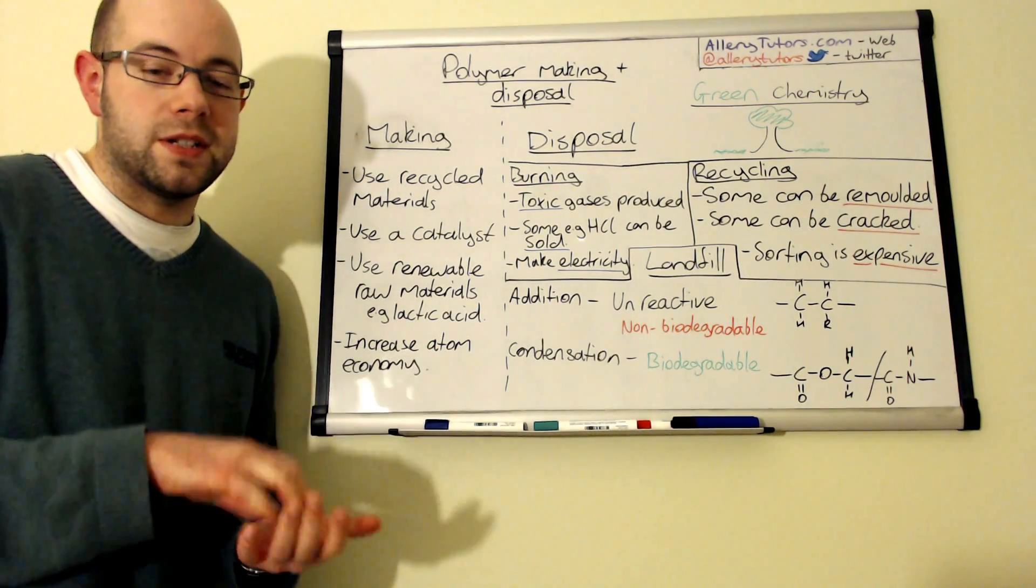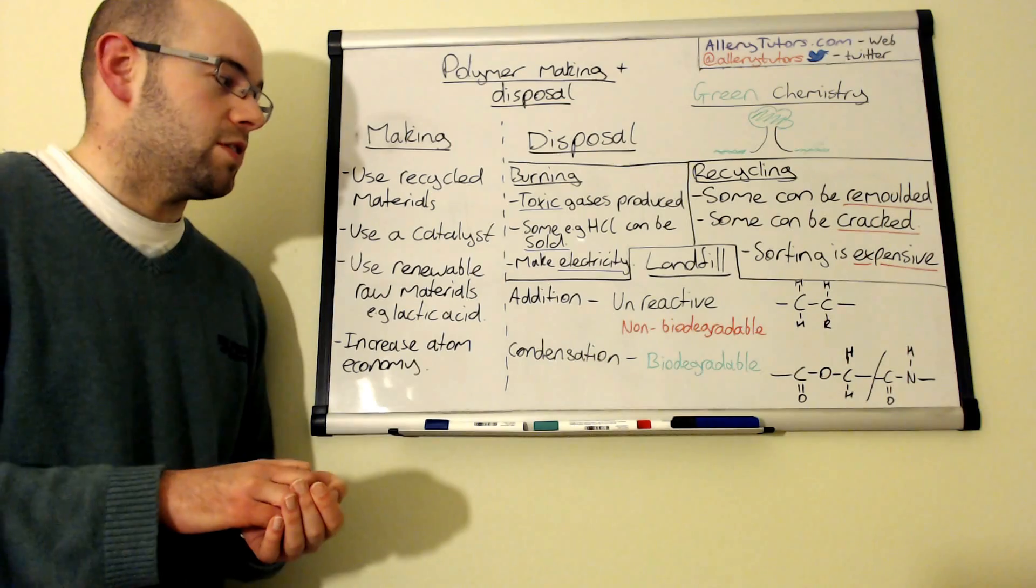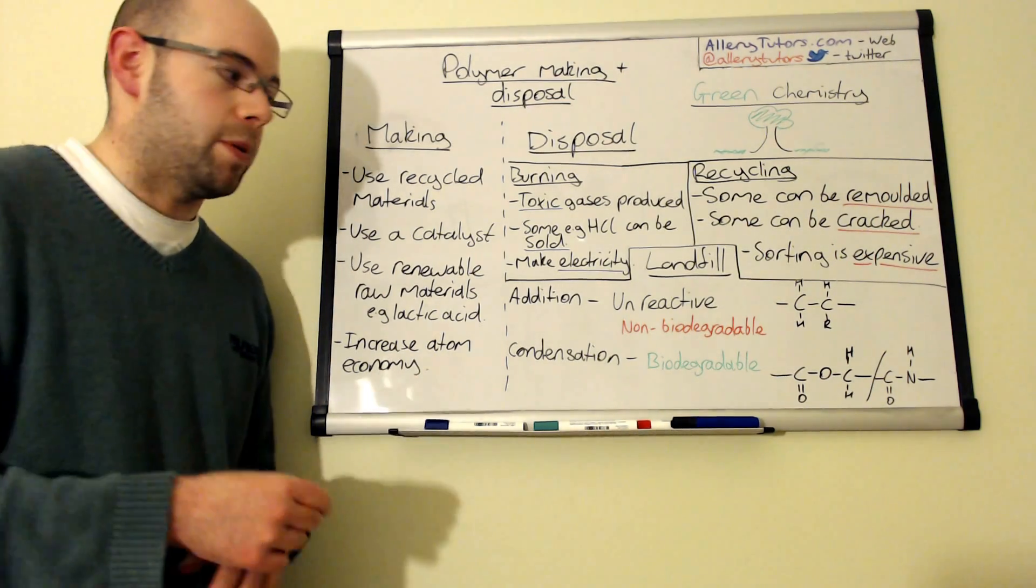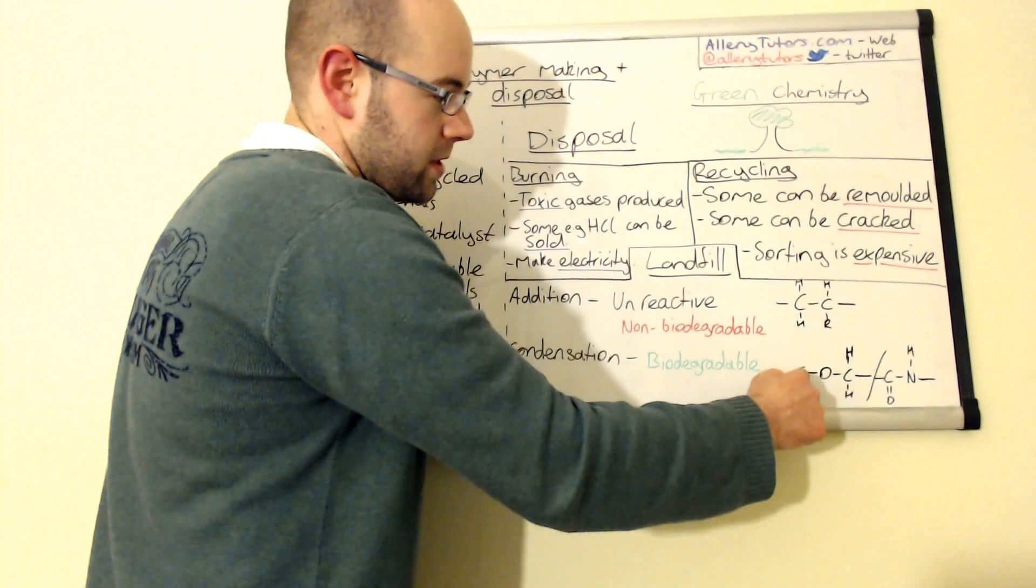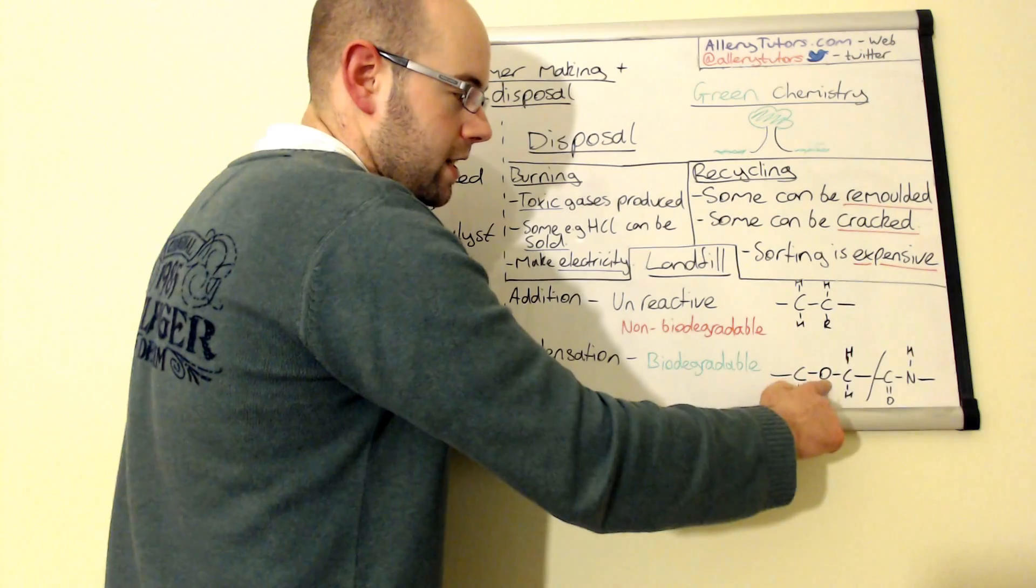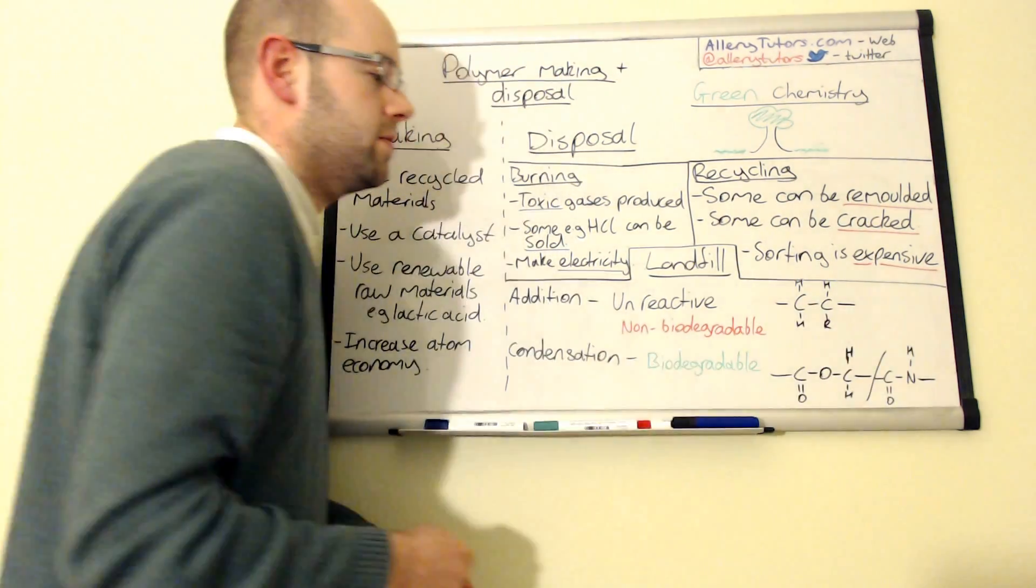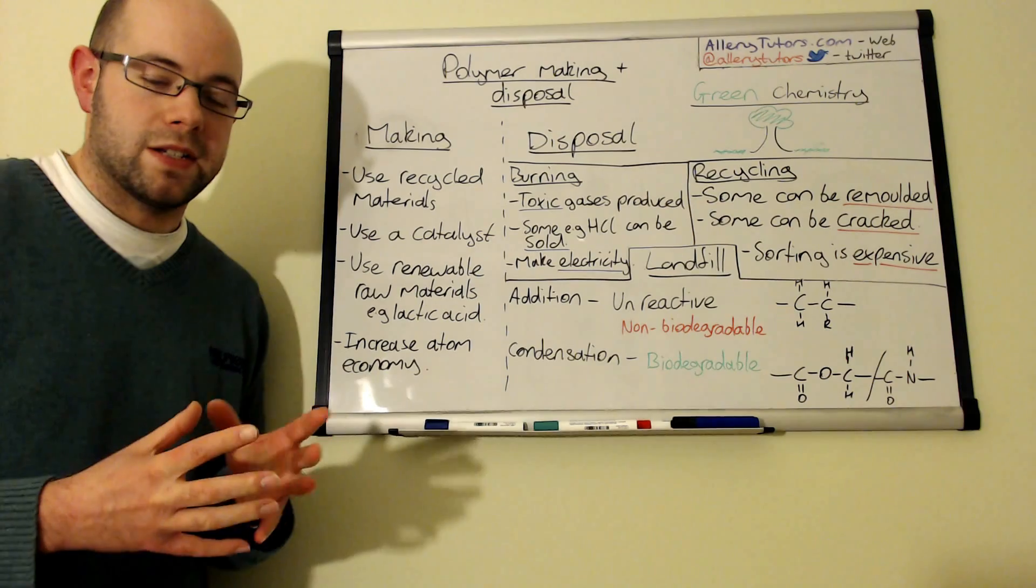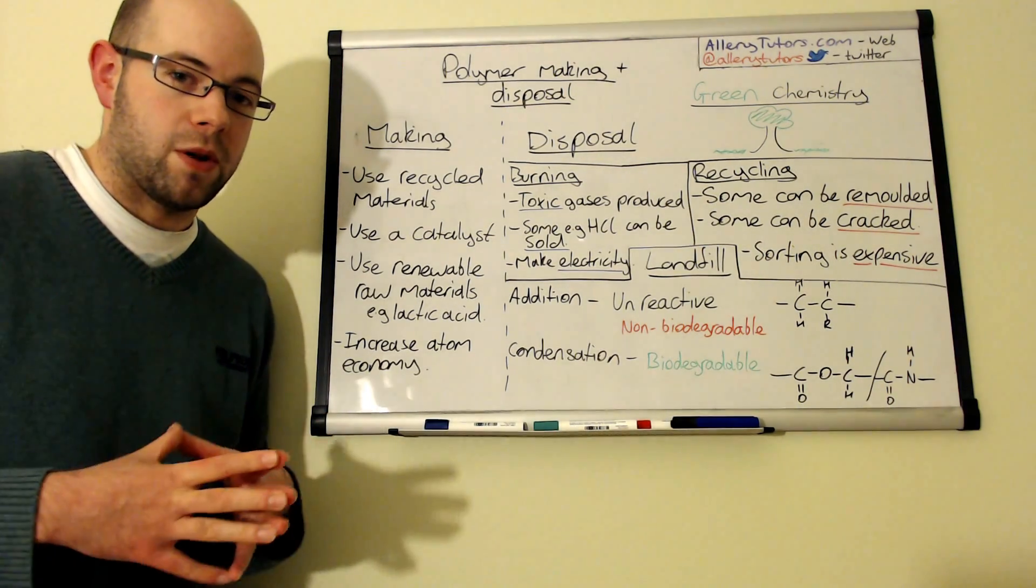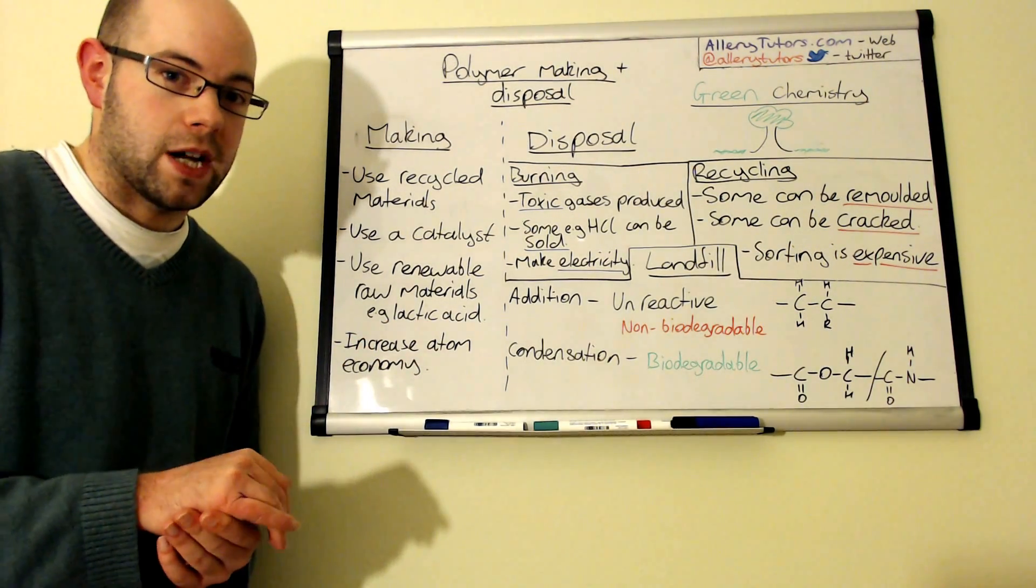On the other hand, condensation polymers are generally biodegradable. You have a polar part in the molecules, for example you can see here we have a delta positive and a delta negative in our polyester and same in polyamides. That means that they can be broken down quite readily, still over a long period of time maybe 50-60 years, but nonetheless they're a lot quicker than these which could take thousands of years to actually degrade.